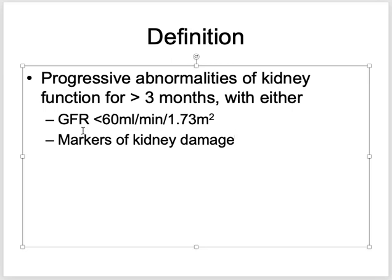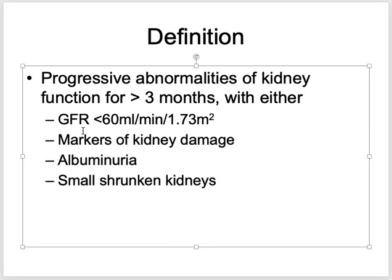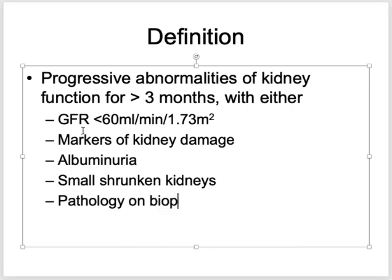Markers of kidney damage include albuminuria, small shrunken kidneys on ultrasonography — defined as kidney size less than 9 cm with increased cortical echogenicity — or pathological findings on biopsy. Biopsy is important because most kidney conditions are diagnosed histologically.